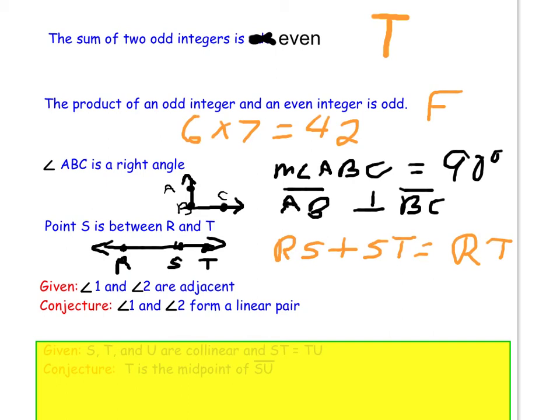No, that is not true. This is a false conjecture. Now I will draw a counterexample. So here's a picture of angle 1 and angle 2. They are adjacent. They do share a common side, but they certainly do not form a line. So that is a counterexample to the conjecture that they must be a linear pair. They can be adjacent without being a linear pair.